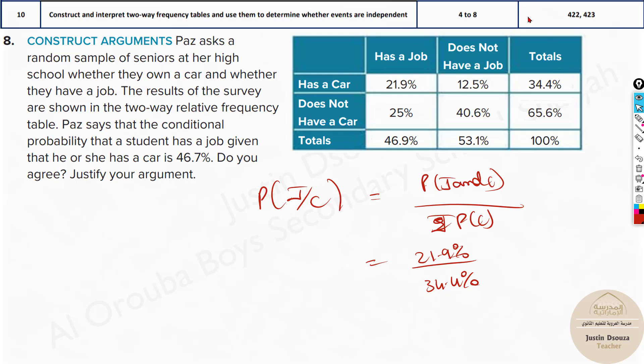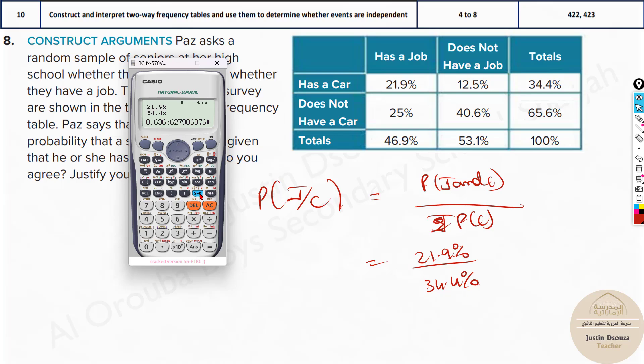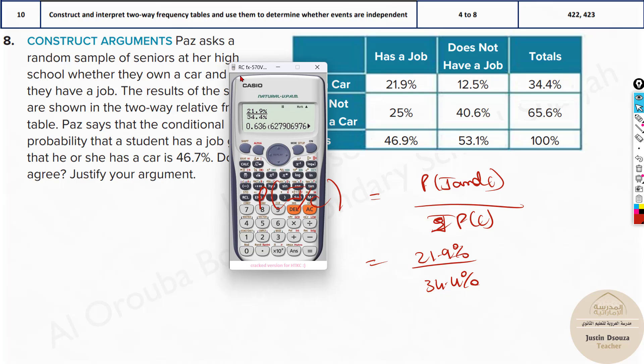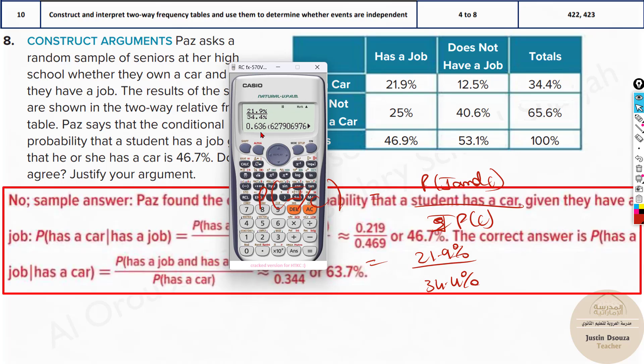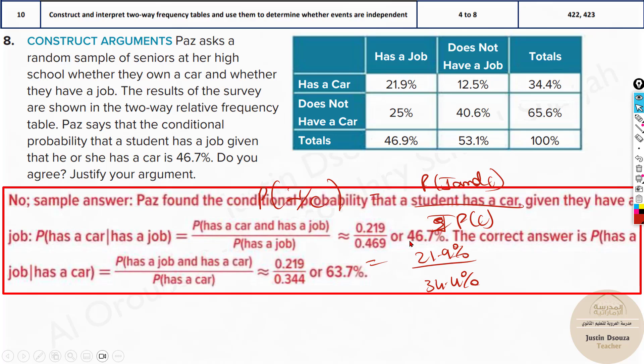Now let's just put it in the calculator. Here the answer we get is, it should be 63.6%. So this is wrong. You can see 63.66, it's 63.7%. You can see here 63.7%. She has taken probability of C condition J, that means has a car condition already has a job. So that is the mistake.